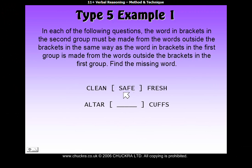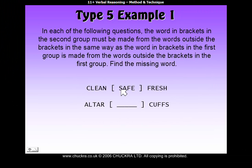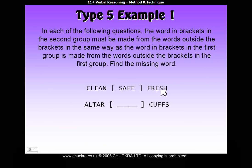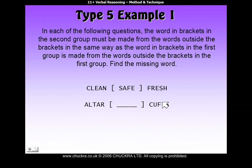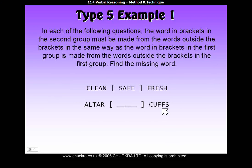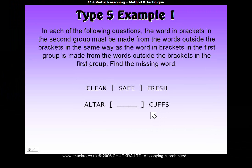To find the first letter of our answer, we go back up to 'safe' and look at its first letter, which is an S, and decide where it comes from in 'clean' and 'fresh'. The only S is in 'fresh', at the fourth position in the word on the right. So we come down and look at the fourth position in the word on the right, which is an F from 'cuffs' — that is the first letter of our answer.